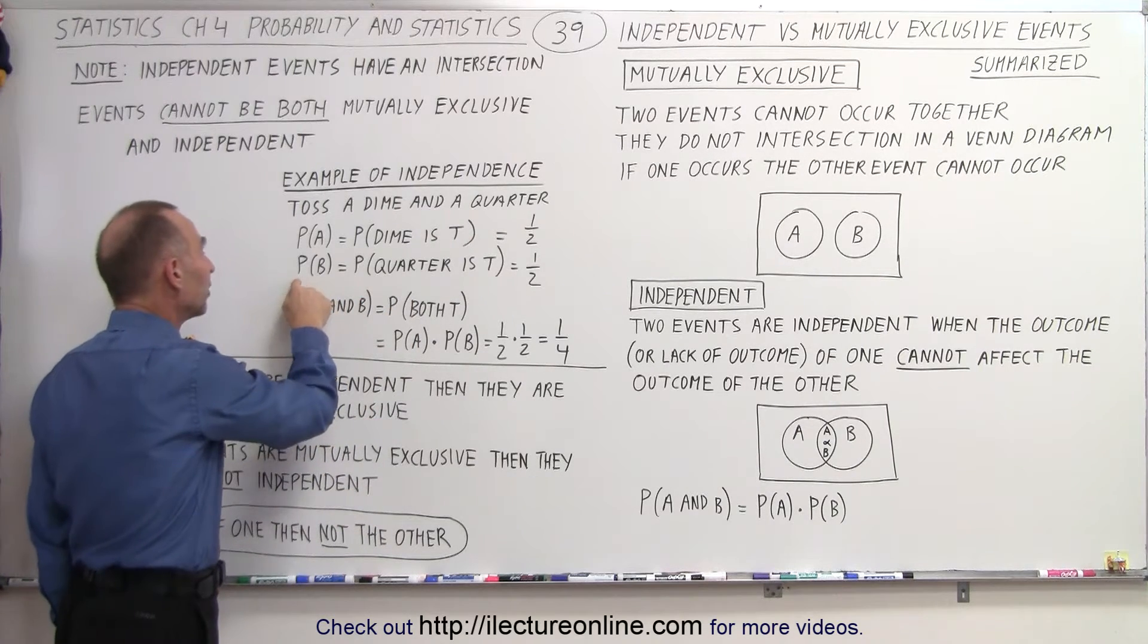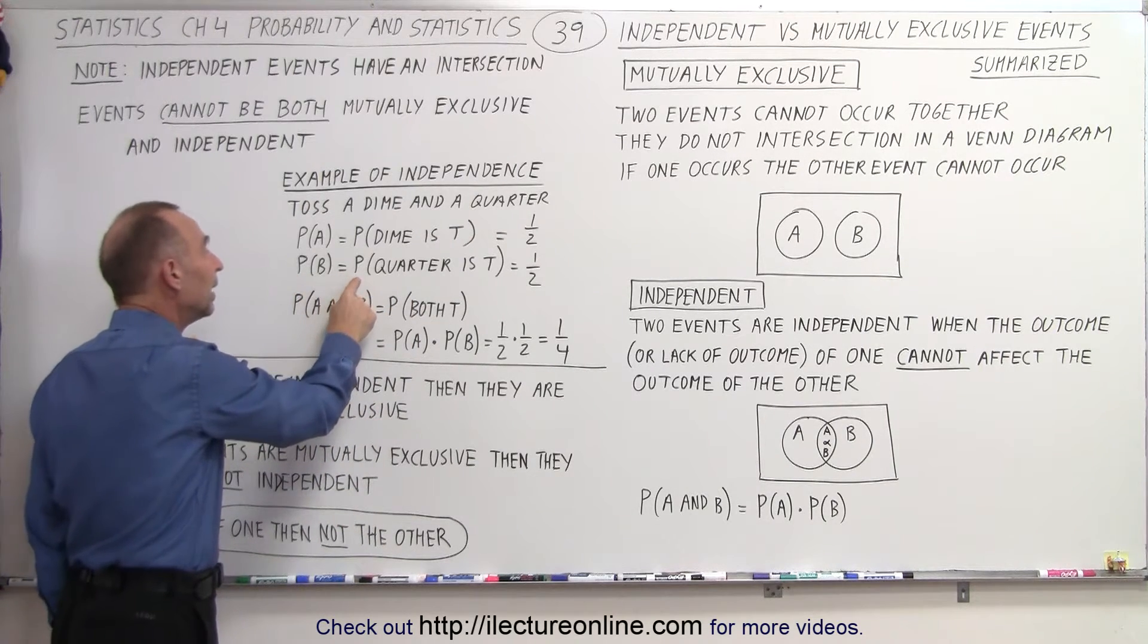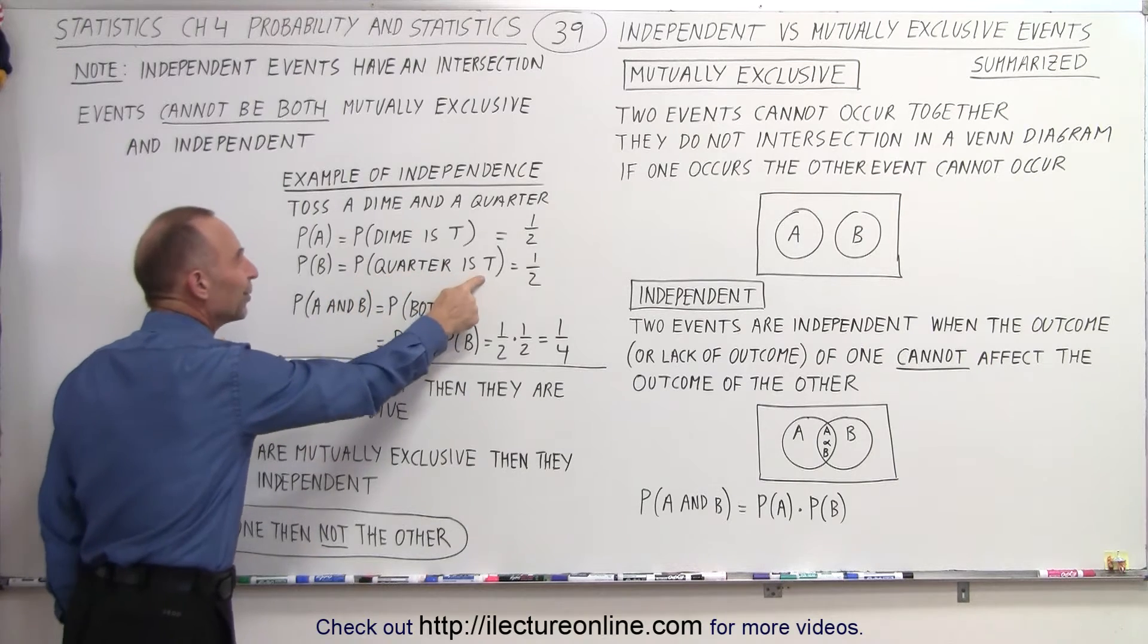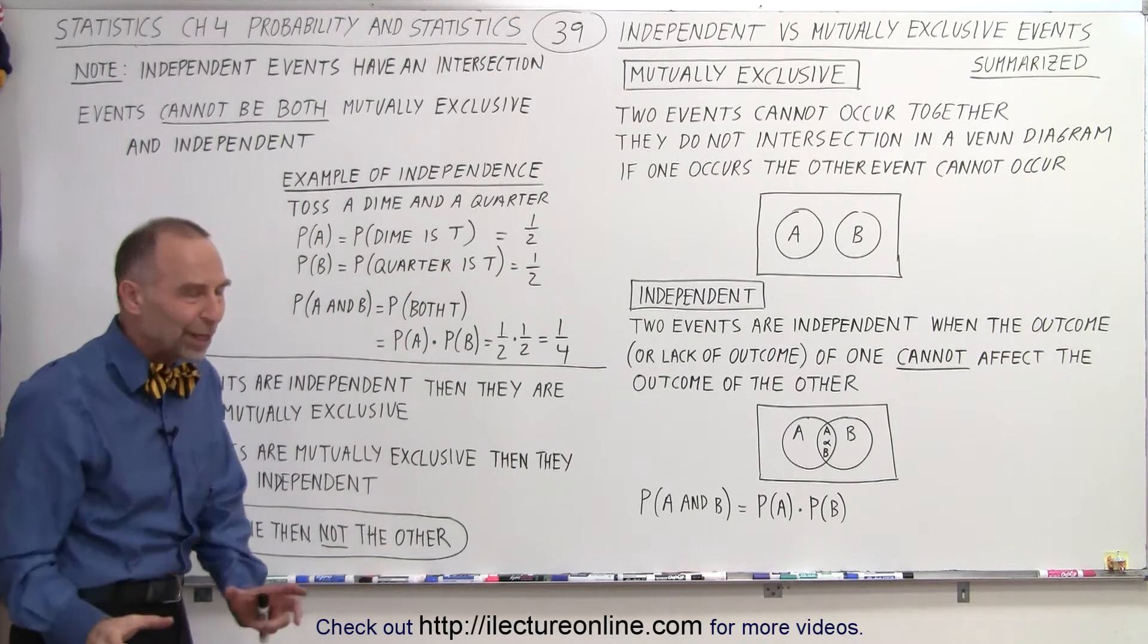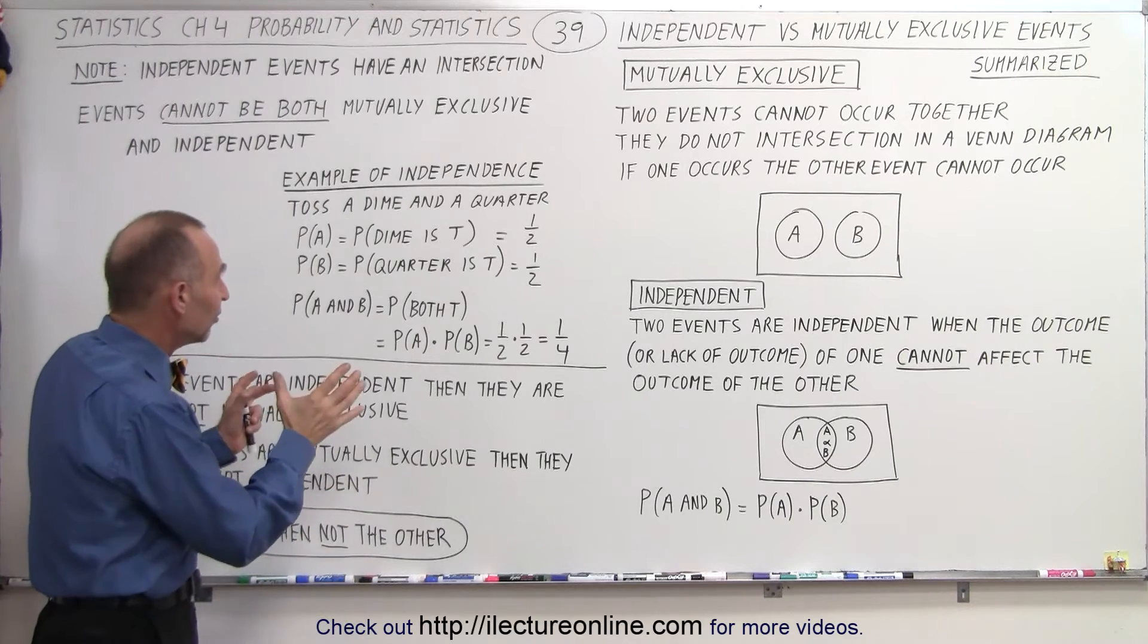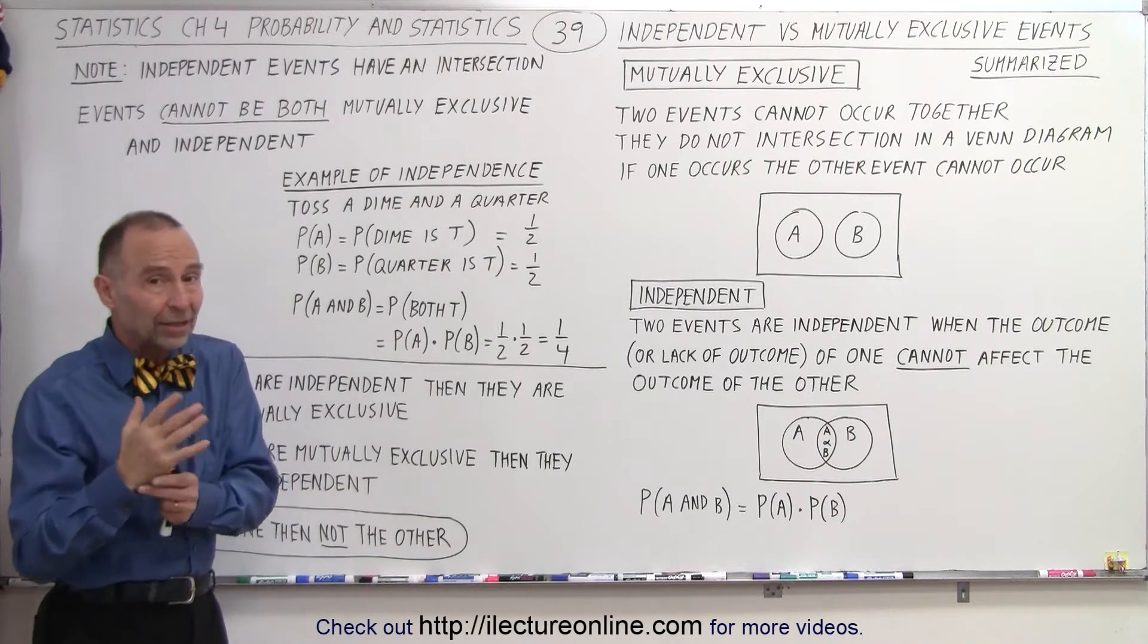And let's then say that the probability of B is equal to the probability that the quarter will equal tails. And that's, of course, also equal to one half.